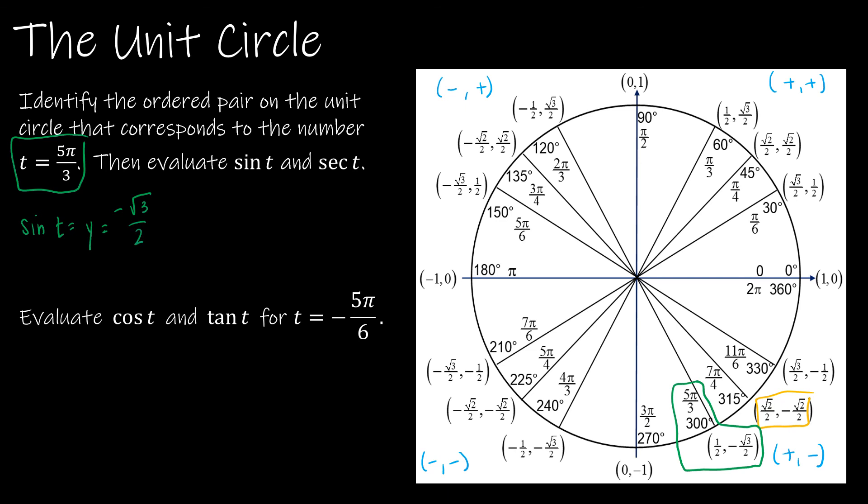Secant was the inverse of cosine. And cosine was x, so this is 1 over x. So that means I have 1 over 1/2, which is 2.